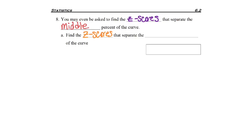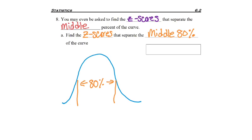Find the z-scores that separate the middle 80% of the curve. You'll always be given a specific percentage you're looking for in the middle. So I'm going to go ahead and draw my curve as best I can, and figure out what 80% in the middle would look like.